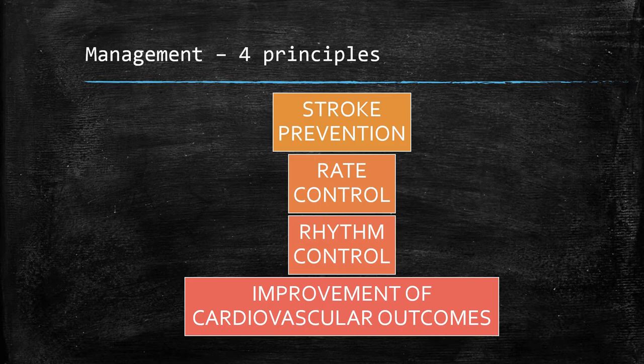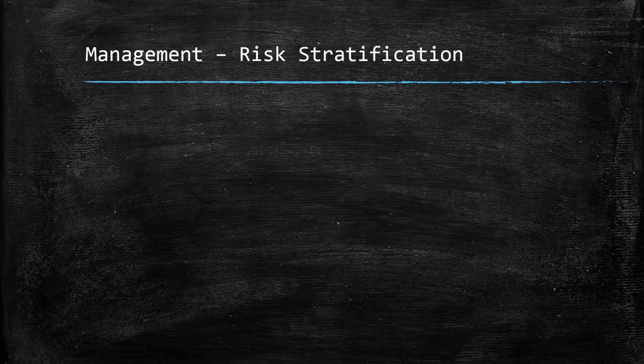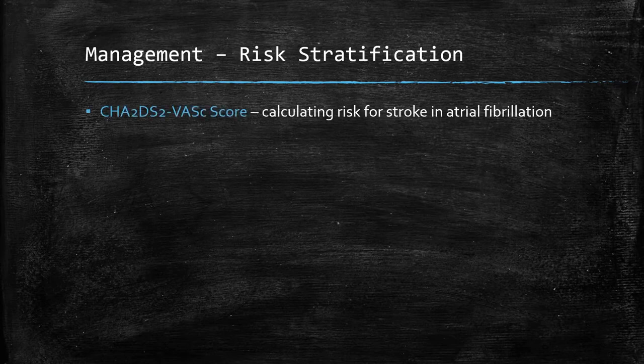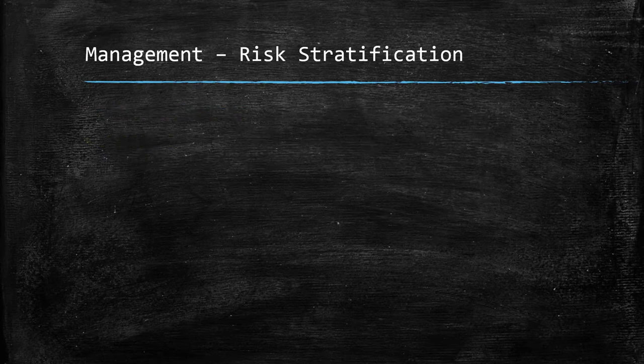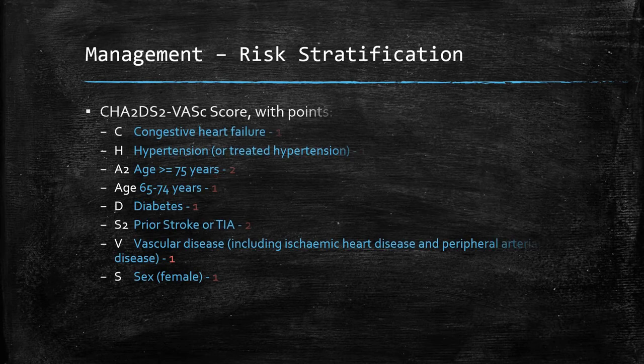Let's start by mentioning the scores we use to help manage the condition. CHADS-VASc calculates risk for stroke in atrial fibrillation. HAS-BLED scores permit us to calculate risk for major bleeding with AF on anticoagulation, which is useful when prescribing anticoagulation.